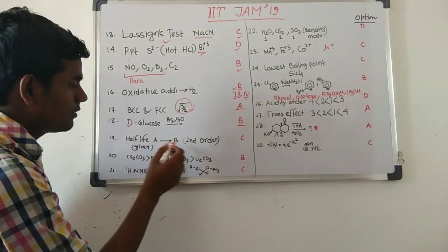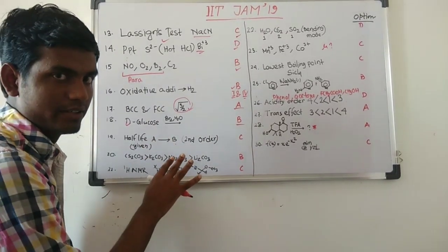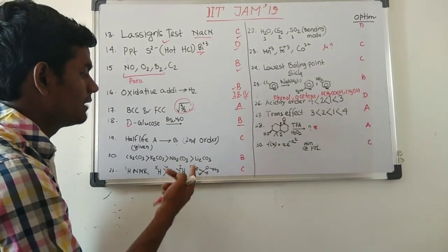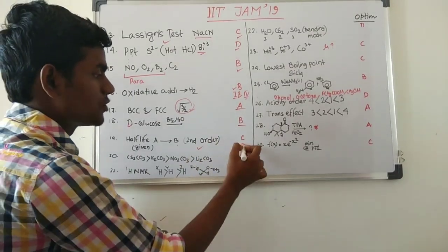Then they have given a half-life of some A to B reaction and the concentration was given. As you know the common formula: t half is proportional to 1 by A0 to the power n minus 1. If you do it, it will come to n equal to 2, that is second order and the option will be C.